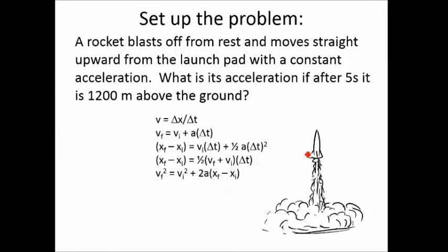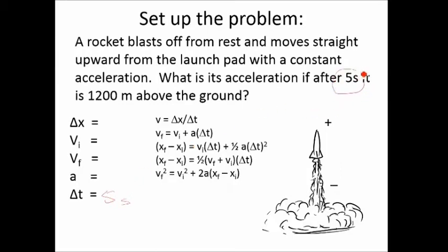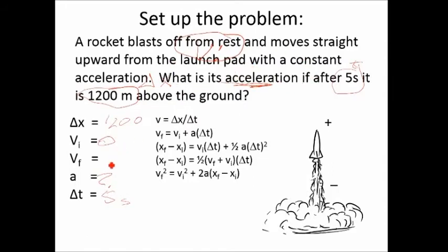Let's practice setting up another problem. Draw a picture, label plus and minus, and write down the five variables. We have five seconds (time), a distance of 1200 m (ΔX), and starting from rest means VI = 0. We're solving for acceleration and don't care about final velocity VF. So we find the equation missing VF and plug in the numbers.